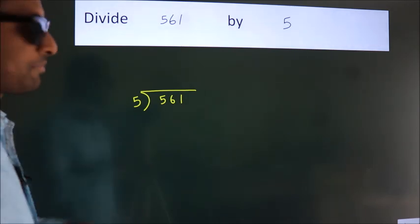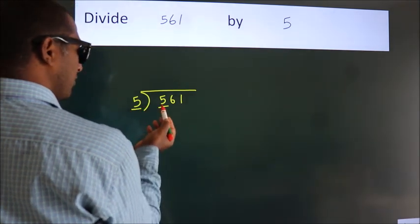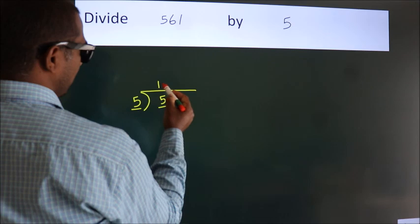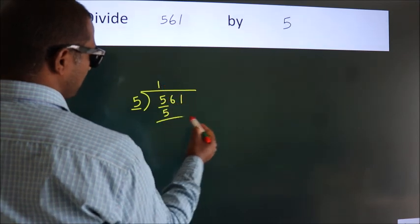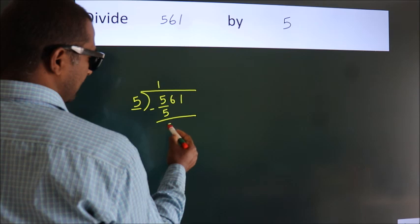Next, here we have 5, here 5. When do we get 5? In the 5 table. 5 once is 5. Now we subtract, we get 0.